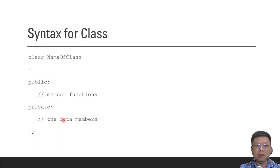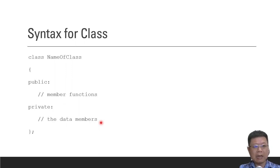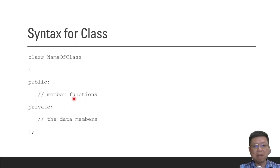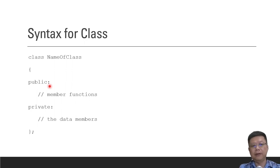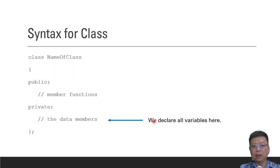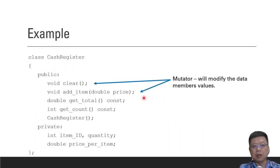Private means the data members — any variable that you want to declare, we put it under the private section. Any member functions — any functions that we have declared — we put them under the public section. The private section contains variable declarations, and the public part will have the functions themselves.